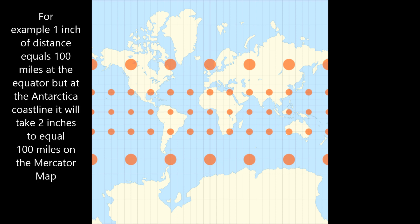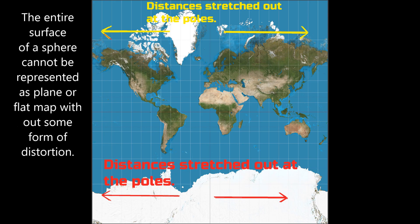For example, 1 inch of distance equals 100 miles at the equator, but at the outer coastline it will take 2 inches of distance to equal 100 miles on the Mercator map. The entire surface of a sphere cannot be represented as a flat map without some form of distortion.